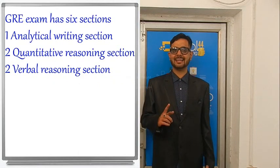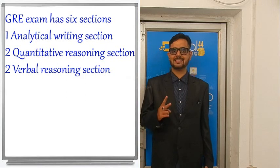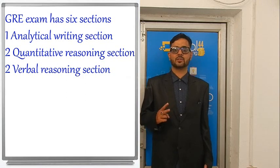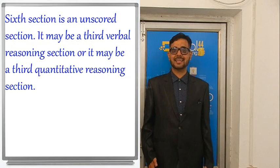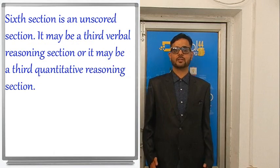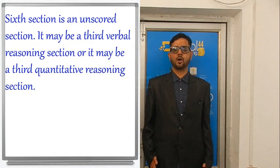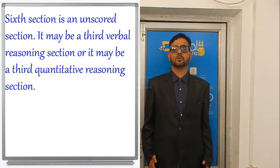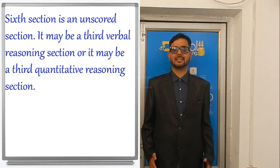The GRE exam has six sections: one analytical writing section, two verbal reasoning sections, and two quantitative reasoning sections. The sixth section is an unscored section — it may be a third verbal reasoning section or a third quantitative reasoning section. You will not be told which section is unscored, so you have to seriously attempt all six sections in your exam.